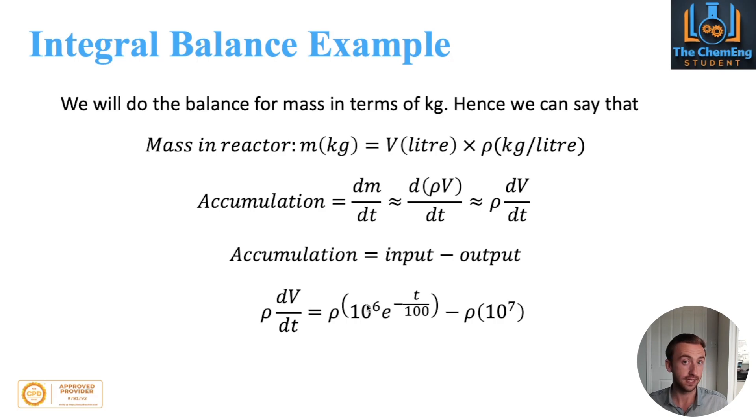Our input is the 10 to the power 6 e to the power minus t over 100, and that has to be multiplied by the density, because ultimately that's the way in which we get the mass. And then our output is going to be the minus, so rho times by 10 to the power 7.